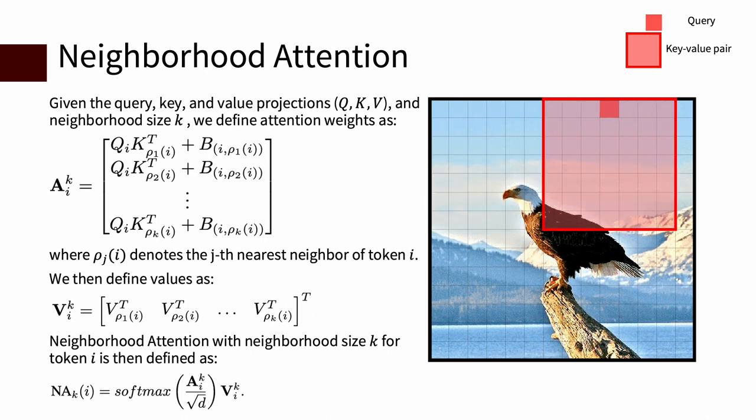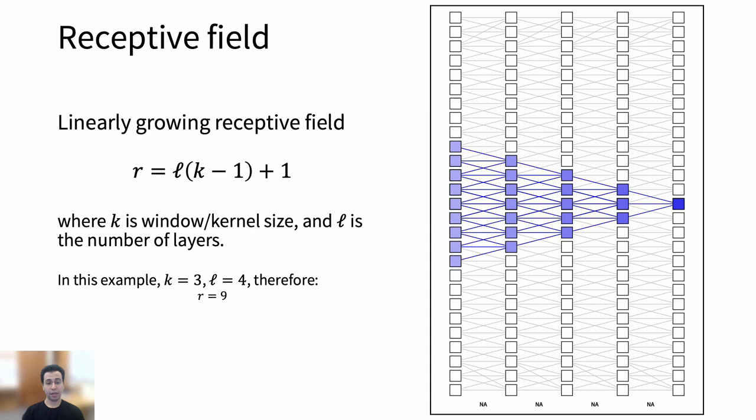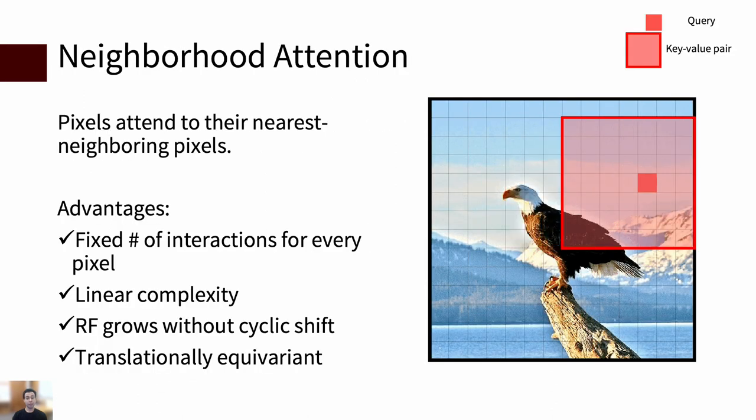We start off by defining a new pattern, neighborhood attention. Every token or pixel attends to its nearest neighbors. You can see it's sliding across the input without compromising the fixed number of interactions per token and maintains linear complexity. Its receptive field grows linearly similar to SASA. It's also translationally equivariant.